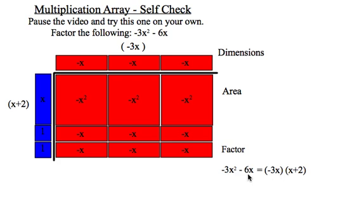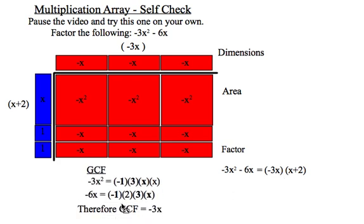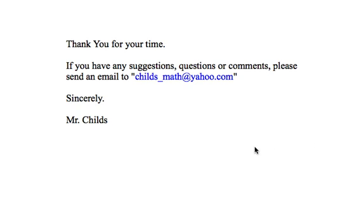If we check the greatest common factor for each piece, I see that I have a negative 1, a 3, and an x in common. And once again, the unbolded x and 2 are what make up inside the bracket. Thank you for your time. Once again, if you have any suggestions, questions, or comments, please send me an email at childs_math at yahoo.com.